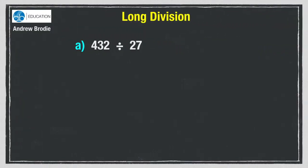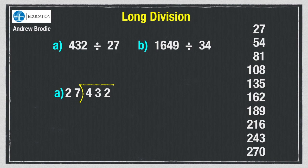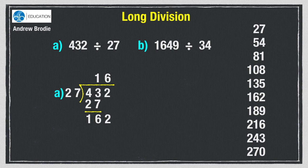Here are a couple of examples for you to try — you could pause the video while you try them. Here are the answers. Question A: 27 into 4 won't go, so how many 27s are there in 43? Only one, so now subtract the 27 we've used from the 43 to leave 16. Bring down the two. How many 27s in 162? There are six. Final answer: 16.